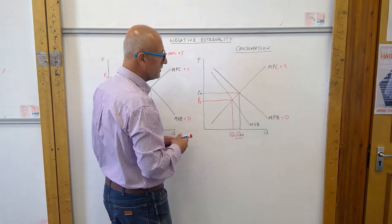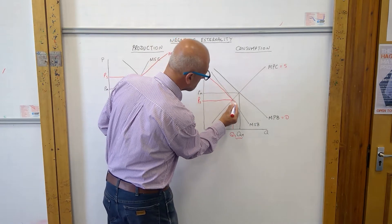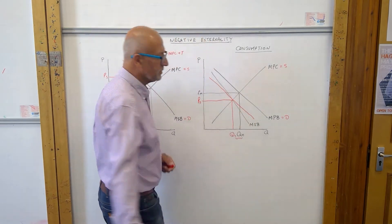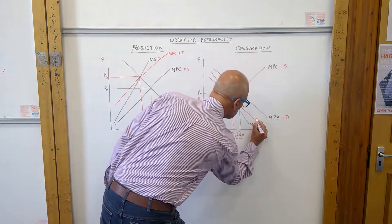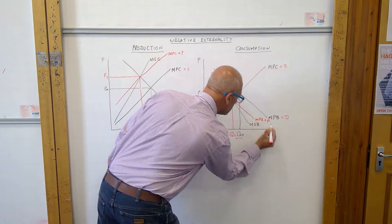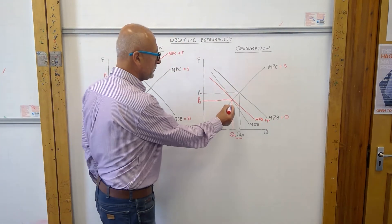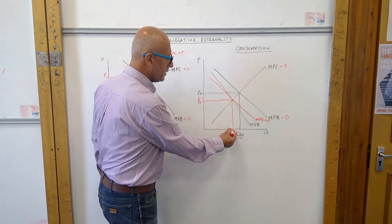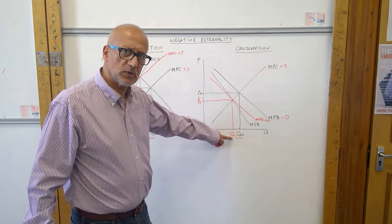So we may be able to cause that to shift inwards by whatever method we choose so that this becomes the new marginal private benefit plus, let's call it P for policy, whatever that policy is. Now we have a new equilibrium and that equilibrium produces QS, which is what society wants.